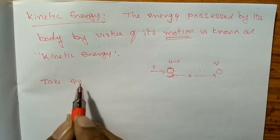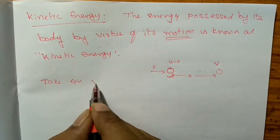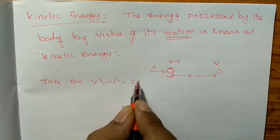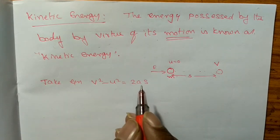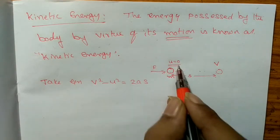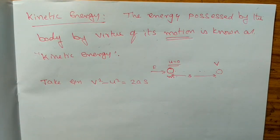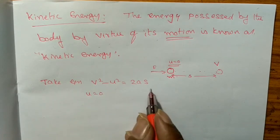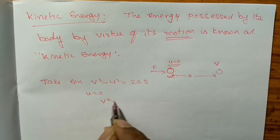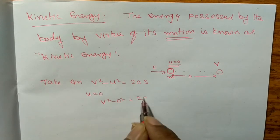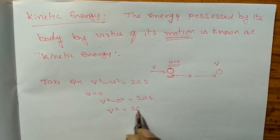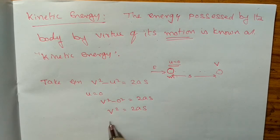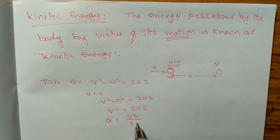Take the equation from kinematics: V squared minus U squared is equal to 2AS. Since U is equal to zero, substituting gives V squared minus zero squared equals 2AS. Therefore V squared equals 2AS, and the acceleration A is equal to V squared divided by 2S. This is equation number 1.